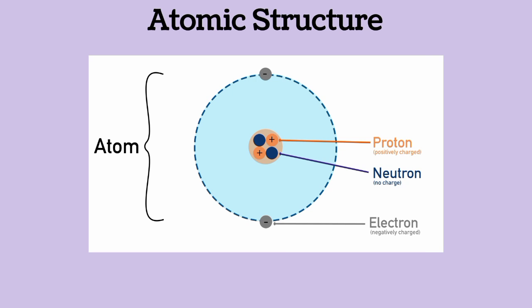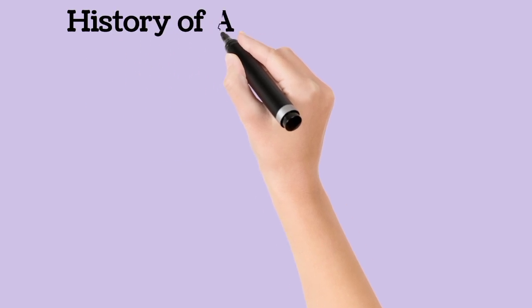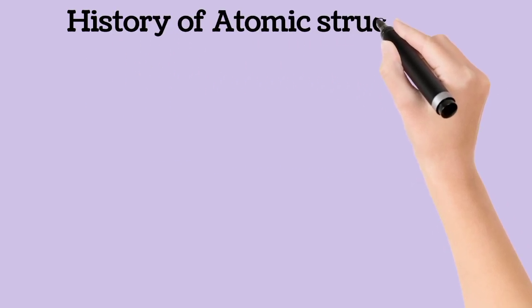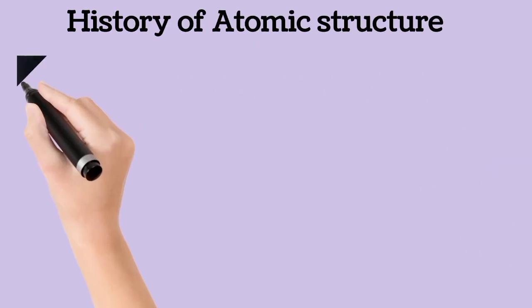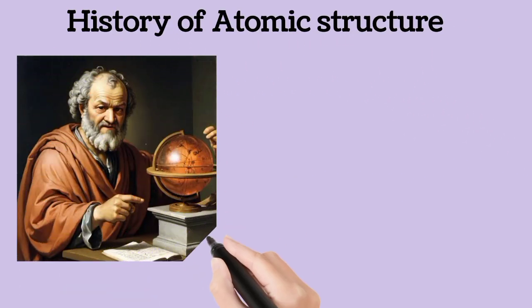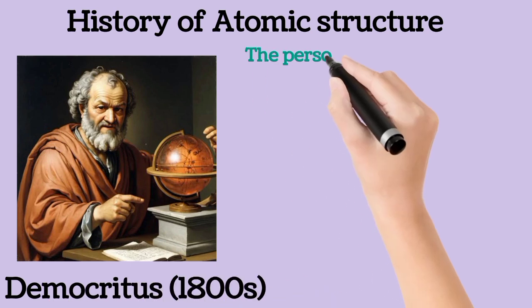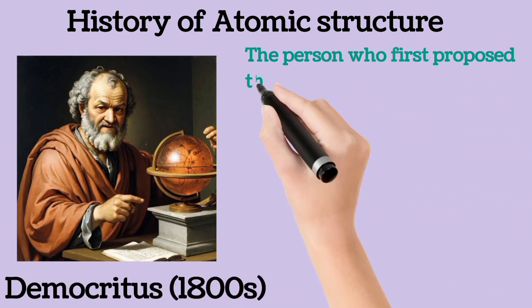For the neutral atom — that is, the atom that doesn't have a net positive or negative charge — the number of protons and electrons are the same.